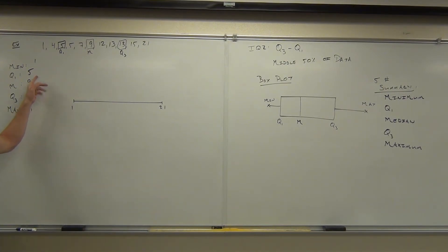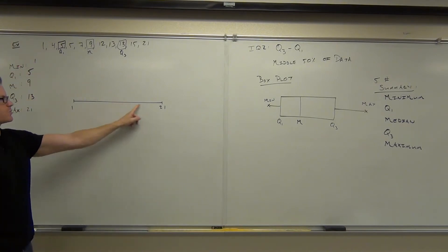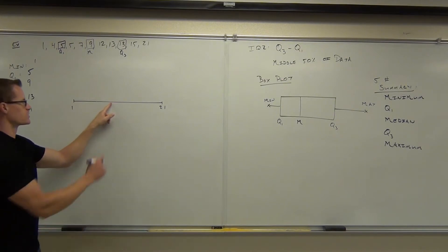We're going to do the median first, so basically the same order that we found these numbers in. Where's 9 closer to? The 21 or the 1? So we're going to put it like, this would be 10, just slightly over, not that much closer. Just slightly over.